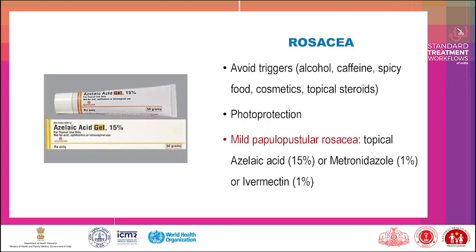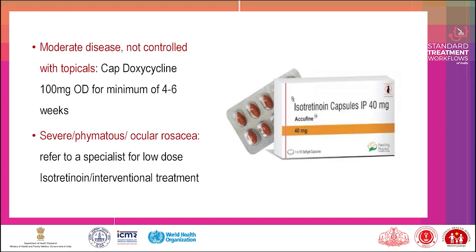Management of rosacea: avoid triggers — alcohol, caffeine, spicy food, cosmetics, and topical steroids. Photoprotection is advised. Mild papulopustular rosacea: topical azelaic acid 15%, or metronidazole 1%, or ivermectin 1%. Moderate disease not controlled with topicals: cap doxycycline 100 mg OD for a minimum of 4 to 6 weeks. Severe, phymatous, or ocular rosacea: refer to a specialist for low-dose isotretinoin or interventional treatment.